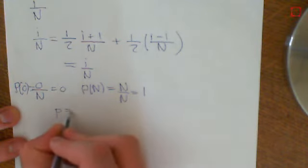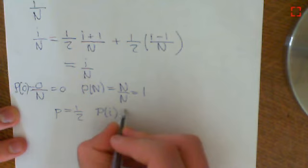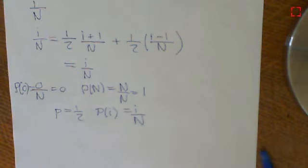Therefore, when p is equal to a half, the probability of winning, if you start off with i coins, is indeed equal to i over n. So that's just the final little bit of this problem.